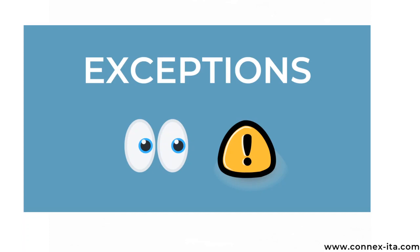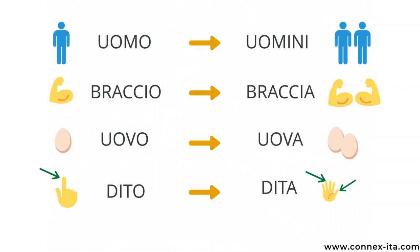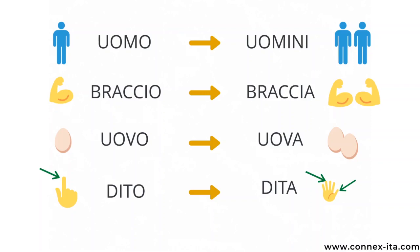To finish up, I just want to mention a couple of exceptions. Uomo means 'man' and changes completely in the plural, which is uomini. Braccio is 'the arm' and its plural is braccia — not bracci. Uovo, which is 'the egg', in the plural is uova — not uovi. And finally, dito is 'the finger' and fingers is not diti but dita. Uomini, braccia, uova, dita.